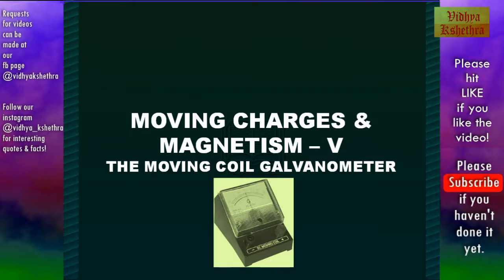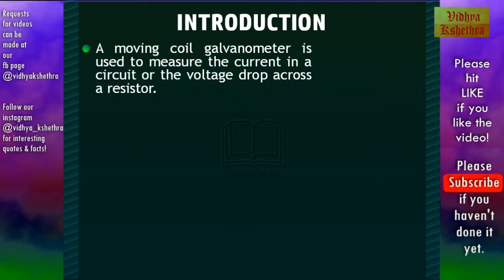So first we shall see about the moving coil galvanometer. A moving coil galvanometer is used to measure the current in a circuit or the voltage drop across a resistor.